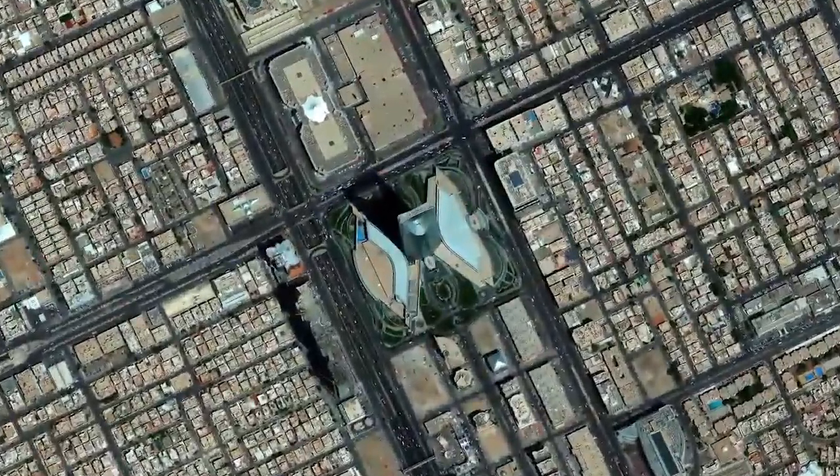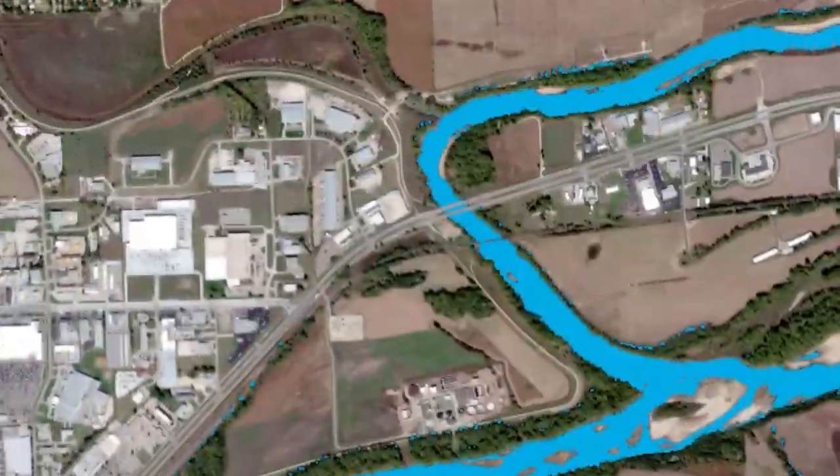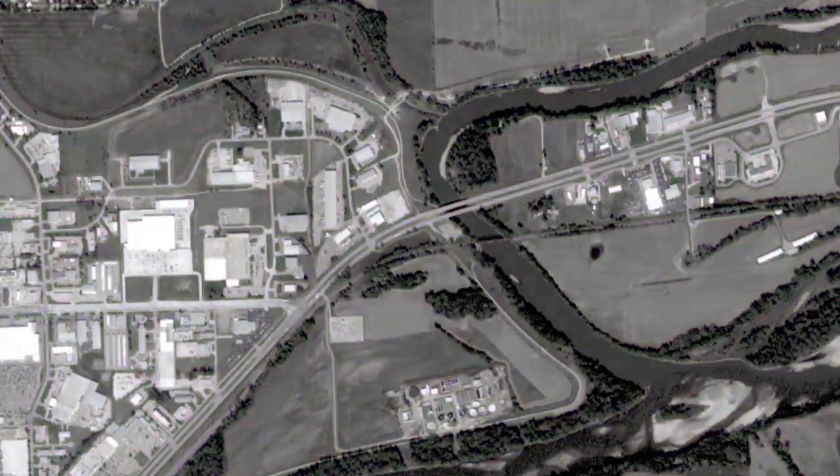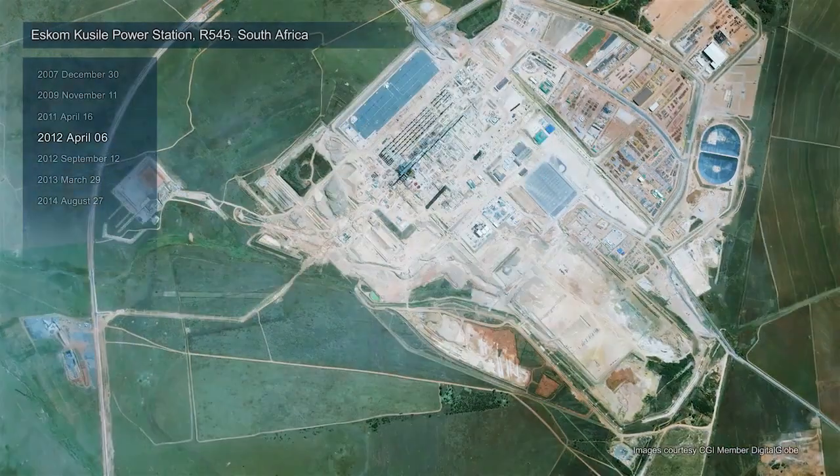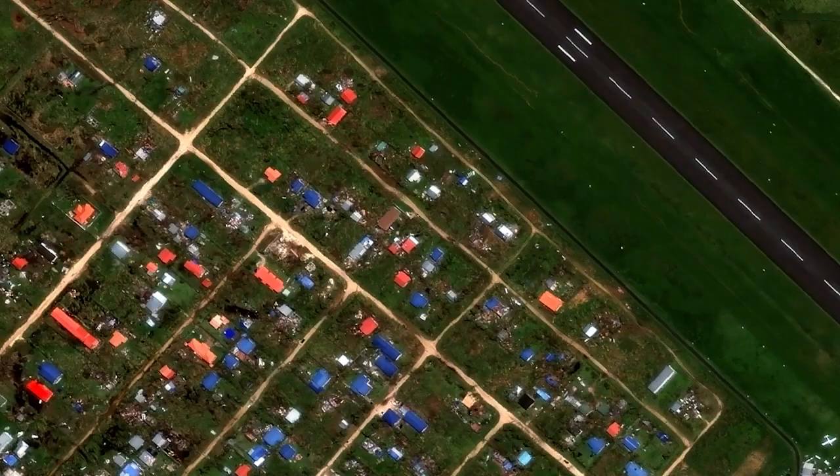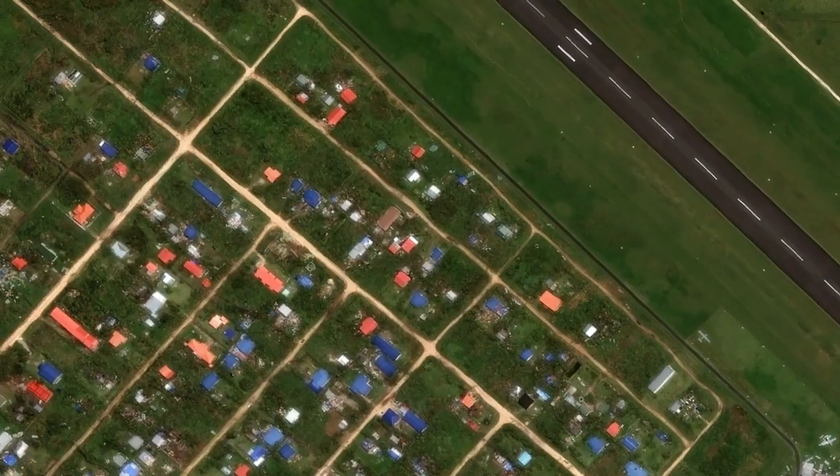Think of spatial resolution as how far you can zoom in. Spectral resolution as what can be seen within each pixel. Temporal resolution is how far back in time we can look and the currency of our freshest image. And accuracy as how close an object is to where it's actually represented in an image.